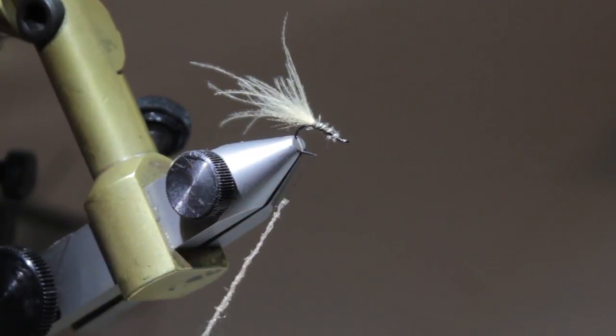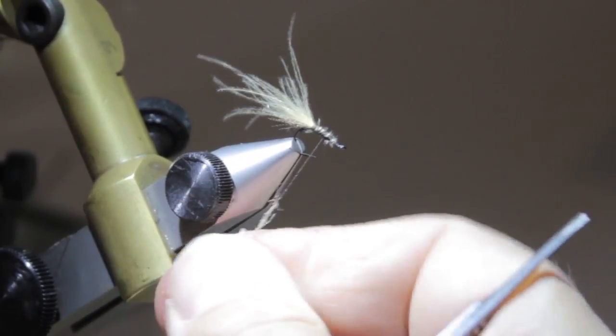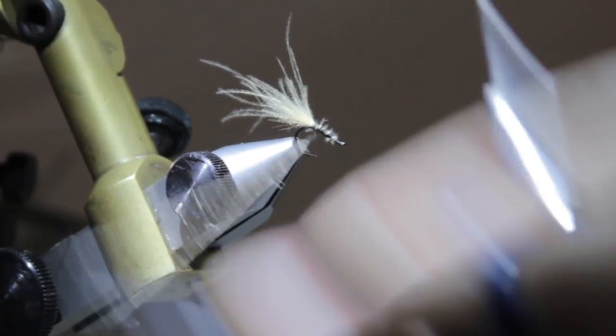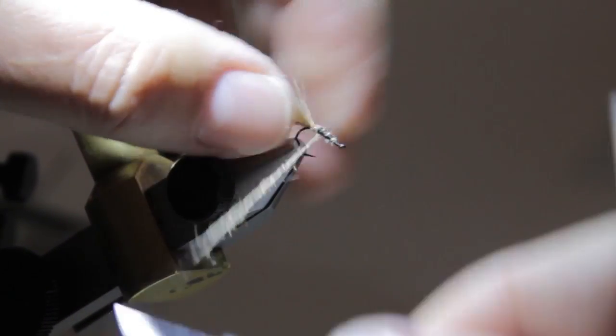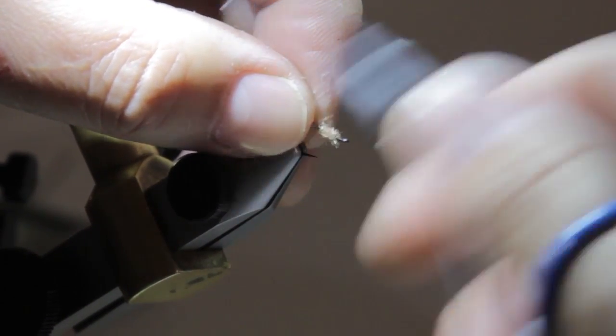Or a tan thread would work well. You've got to get enough dubbing to cover the thread but don't make the body too thick. You want to keep this real thin like an emerger would look. I didn't do a very good job of it. We're going to go with it.